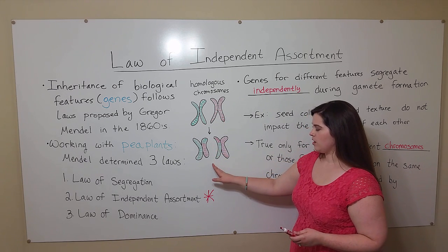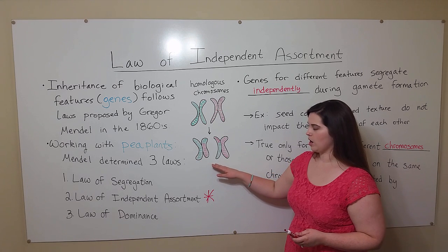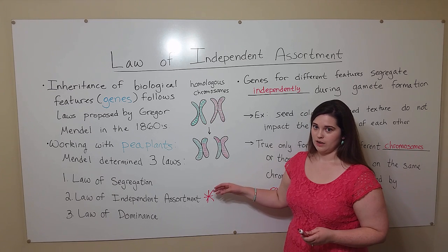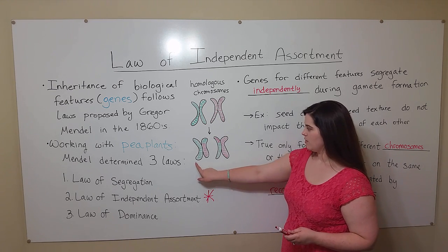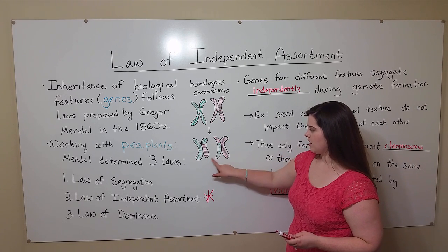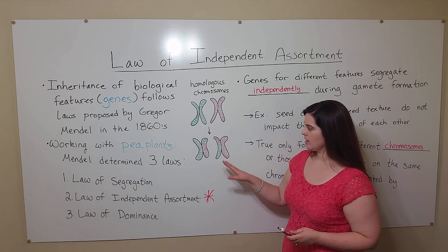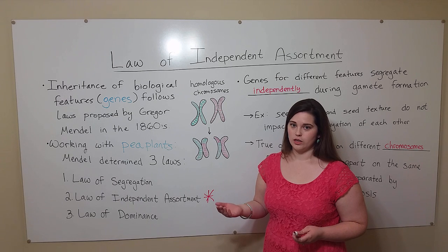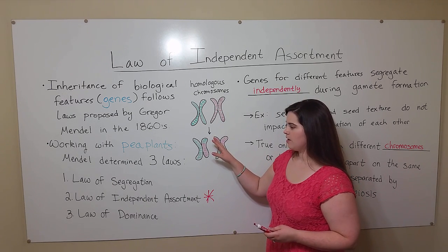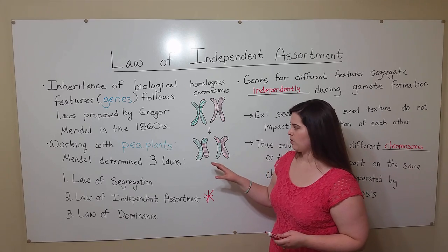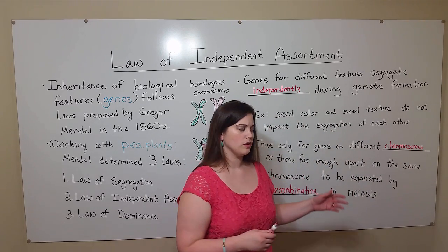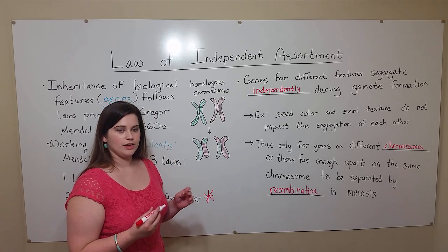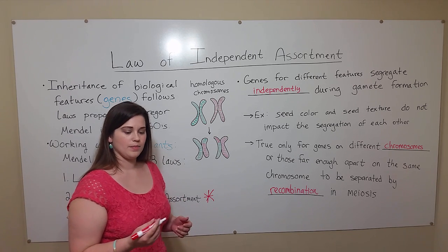These homologous chromosomes are then split apart into sister chromatids in meiosis one, and those sister chromatids are split apart in meiosis two, so you get gametes that will have one of these four chromosomes. With recombination happening one to three times per chromosome, you can get a lot of variation. And going back to the law of independent assortment, if you have genes that are far enough apart on the same chromosome, they can be separated by recombination.